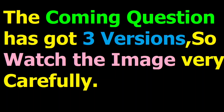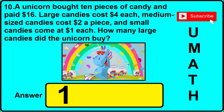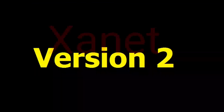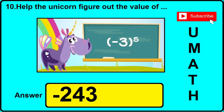Question number 10 has got 3 different versions. First read the question, then watch the image. Version 1: a unicorn bought 10 pieces of candy and paid $16 — how many large candies did the unicorn buy? The correct answer is 1. Version 2: the image shows (−2) to the power of −5 — the correct answer is −0.03125. Version 3: it is given (−3) to the power 5 — the correct answer is −243.